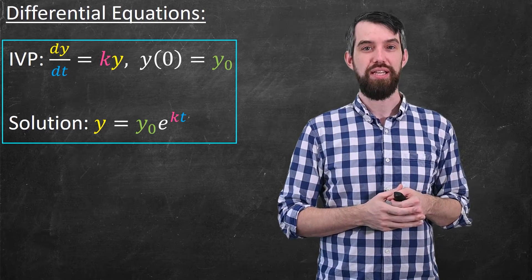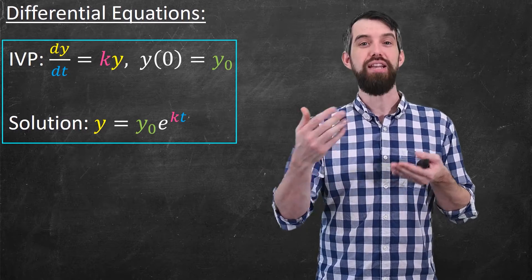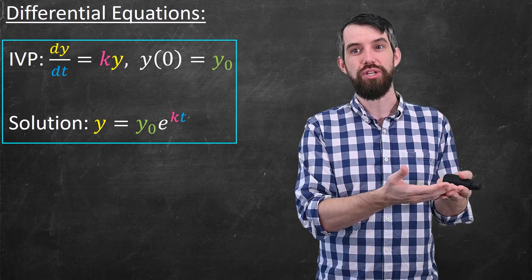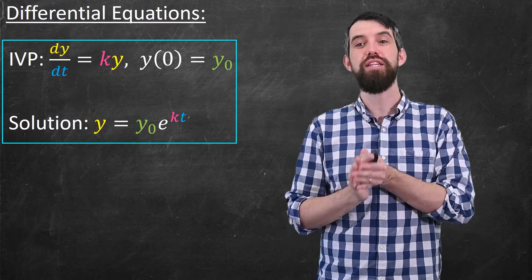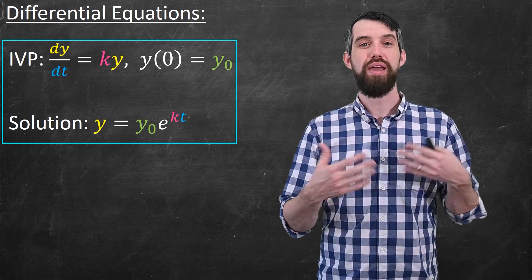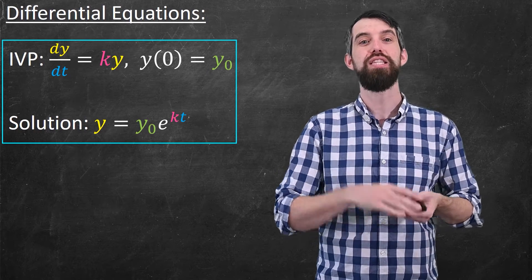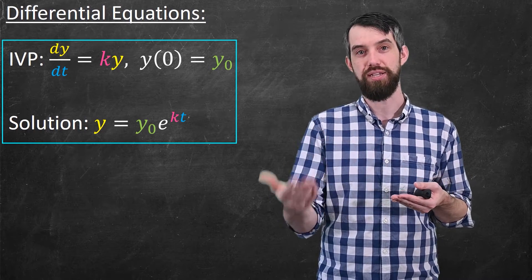Putting these two different things together gives something called an IVP, or an initial value problem. An initial value problem is when I have a differential equation, together with an initial condition that y of zero is some specified value, y naught. And what we've managed to derive is that the solution to that differential equation is that y is this constant y naught e to the kt.